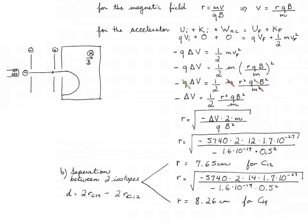The separation between the two isotopes at the detector will be the difference between the two diameters, because the trajectory of the particles in the magnetic field is a half circle. So, 2 times the radius of carbon-14 minus 2 times the radius of carbon-12 equals 1.22 centimeters.